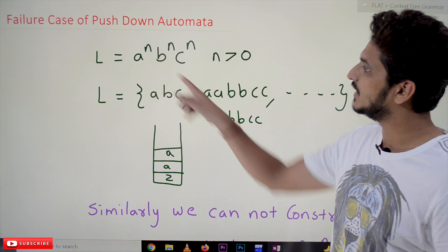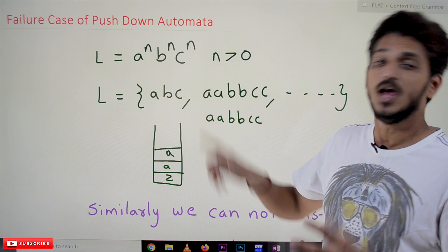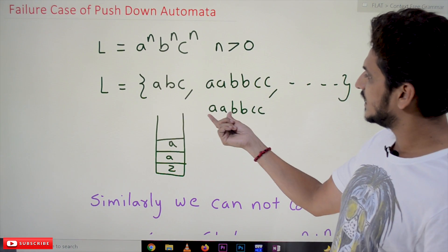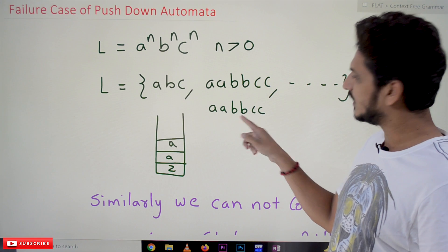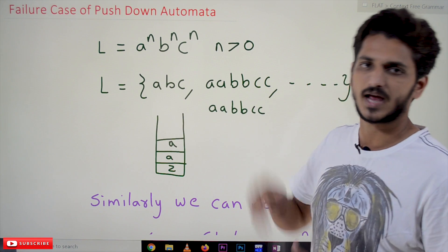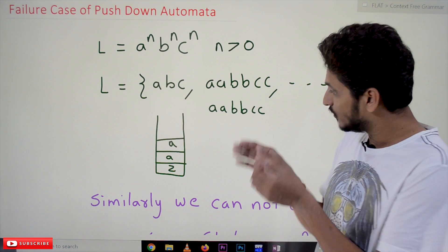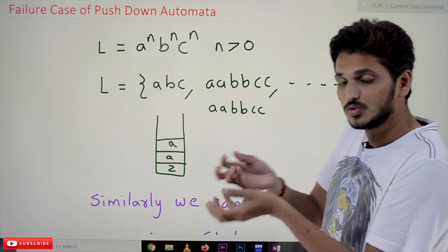Why we cannot construct that? Let's try to understand. If you take an input string aabbcc, whenever you see a, push onto the stack. A, a. Whenever you see b, so the equivalent a—one a should be popped from the stack.